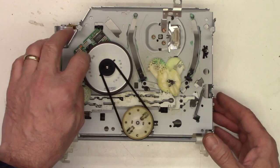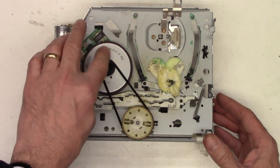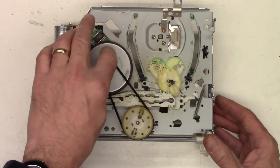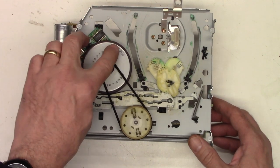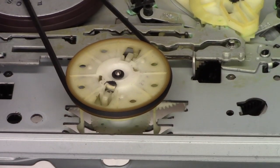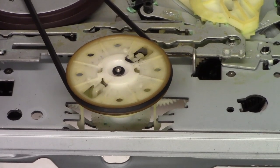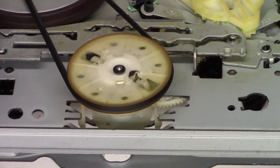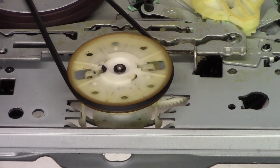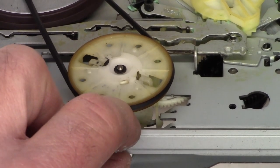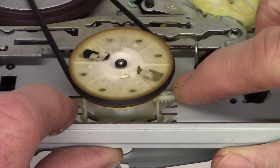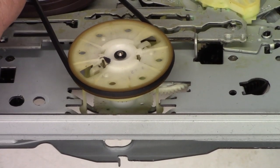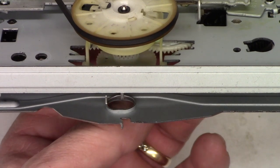So now we'll flip the mechanism over. See if we can see anything going on with the clutch mechanism here. Things don't sound good right off the bat. So I think we're having a gear engagement problem right here.